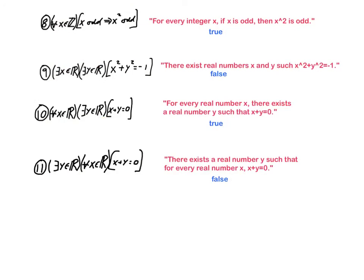Now, number eleven, I've written exactly the same proposition except I've reversed the order in which the variables appear. And you'll notice that it makes a big difference because in words it says there exists a real number y such that for every real number x, x plus y is equal to zero. In other words, there's this very special real number y with the property that no matter what real number you add to it, you get zero. And that's impossible. And so it's a false proposition.